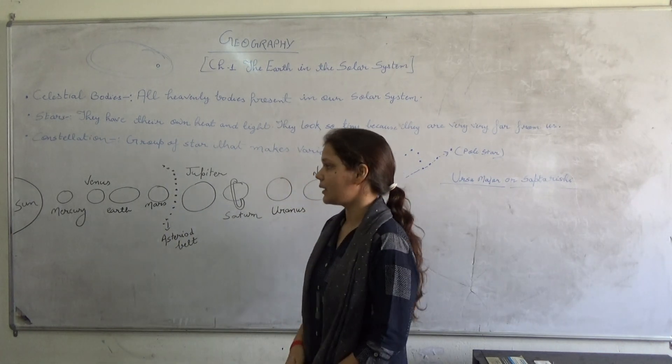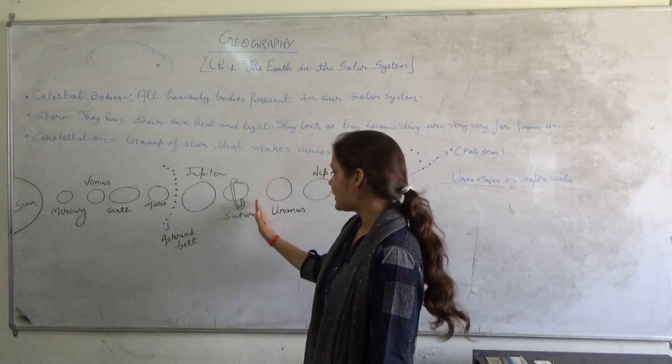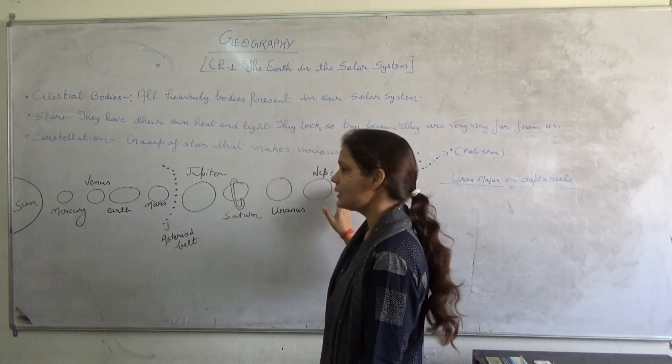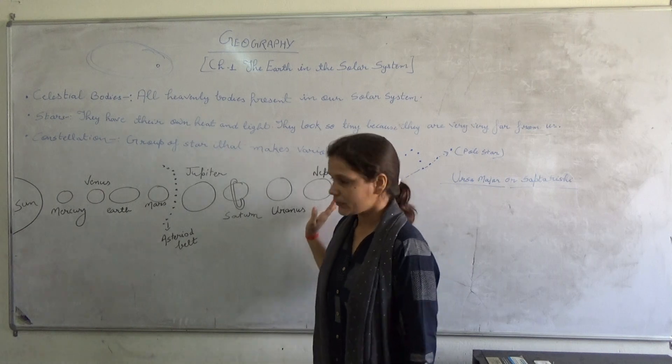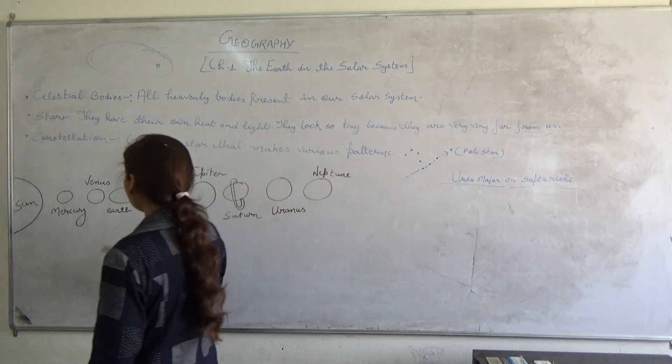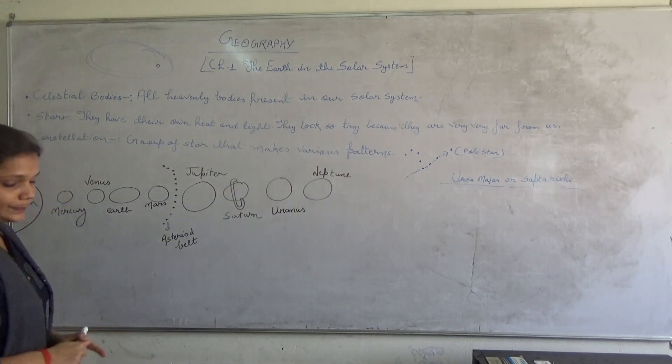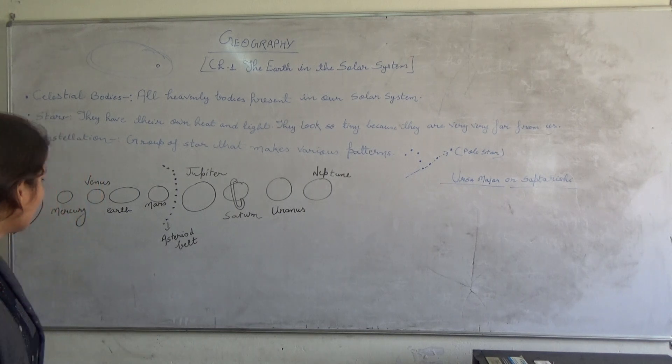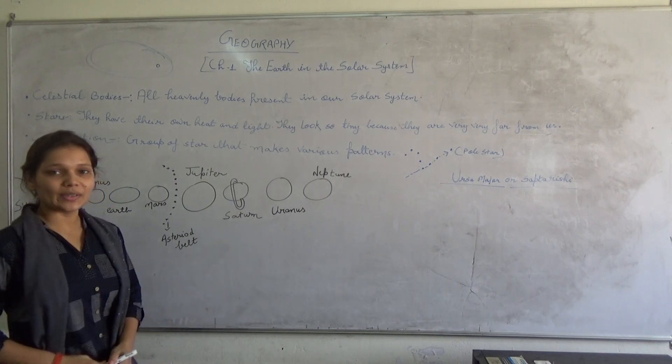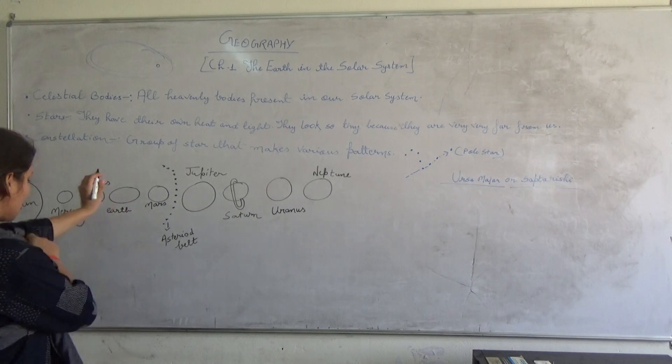Then Jupiter. Jupiter is the biggest planet. Saturn, Uranus and last one is Neptune. Just like these, our satellites are also present in our universe, our solar system.